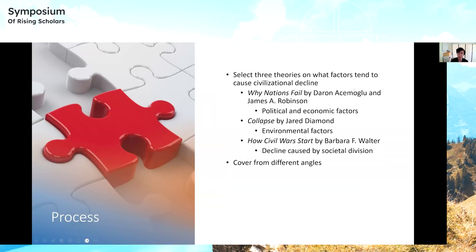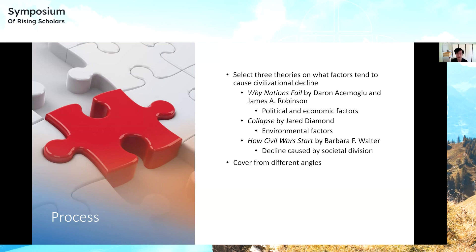I initially wanted to pick a couple of countries to investigate their histories and see how they declined. But as my project went on, I realized that question was a little too large to tackle. So I decided to pick a couple of books — a couple of theories that other historians have proposed as to why societies fail and decline. The three books I chose are Why Nations Fail, Collapse, and How Civil Wars Start. Each of these books covers the idea of civilizational decline from different perspectives, and I'll go into each in more detail.